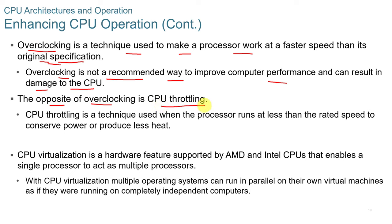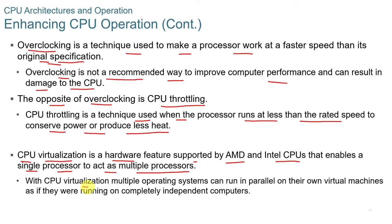You see throttling a lot in laptops and mobile devices. The CPU cuts back on power usage to generate less heat and conserve battery — for example, if you get down to 10% battery on your phone or laptop, the computer goes into CPU throttling to use less power. CPU virtualization is a hardware feature supported by both AMD and Intel that enables a single processor to act as multiple processors. With virtualization, multiple operating systems can run in parallel on virtual machines as if on completely independent computers.